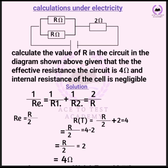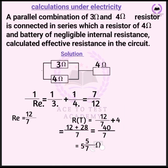Now another calculation: a parallel combination of 2 ohms and 4 ohms, connected in series with a 4 ohm resistor from a battery with internal resistance. Find the effective resistance of the circuit. The 2 ohm and 4 ohm resistors are in parallel, then that combination is connected in series with the 4 ohm resistor.